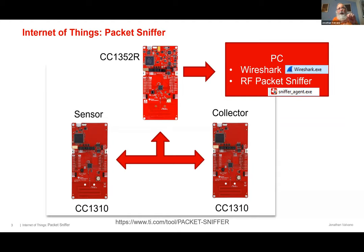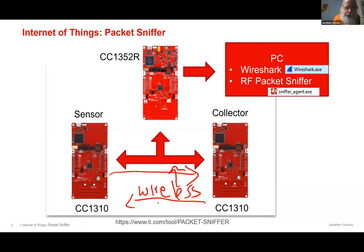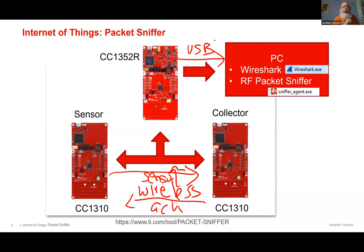The bottom two microcontrollers are essentially the network. The third microcontroller is the sniffer agent — it's wireless communication. Sensor data goes one direction, acknowledge data goes the other. This connection here is a USB cable hooked up with two pieces of software on the PC, the installation of which is very tricky.